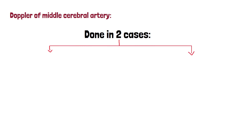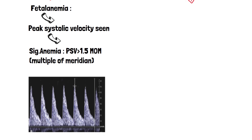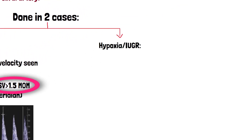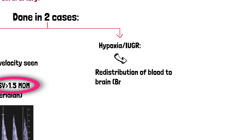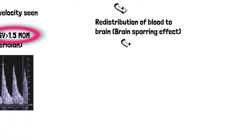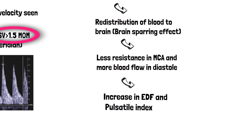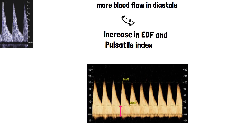Doppler of the middle cerebral artery is done in two cases: fetal anemia, and hypoxia or IUGR (intrauterine growth restriction). In fetal anemia, peak systolic velocity is measured; for significant anemia, peak systolic velocity will be more than 1.5 multiples of the median. In hypoxia or IUGR, redistribution of blood to the brain — the brain sparing effect — occurs, with less resistance in the MCA causing increased end diastolic flow and decreased pulsatility index.